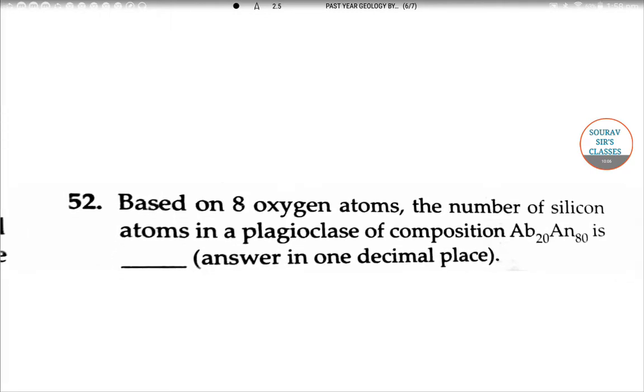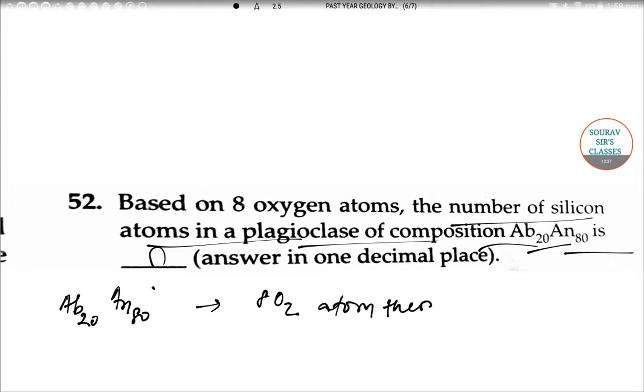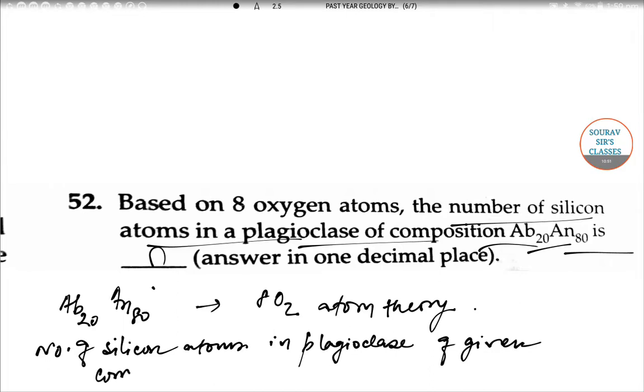Next question: Based on 8 oxygen atoms, the number of silicon atoms in plagioclase of composition Ab20An80 is what? On basis of 8 oxygen atom theory, number of silicon atoms in plagioclase of given composition comes out to be 2.2. The correct value is 2.2.